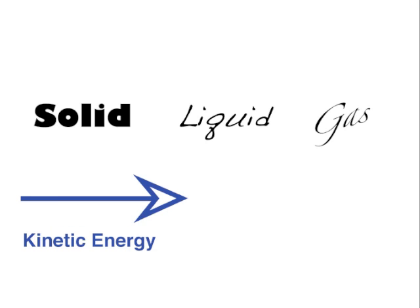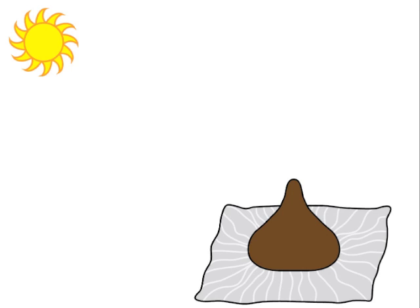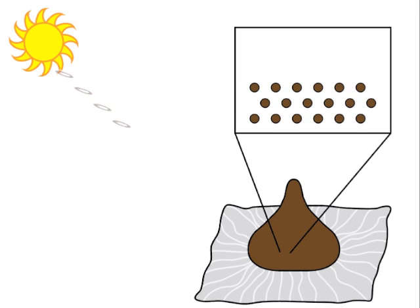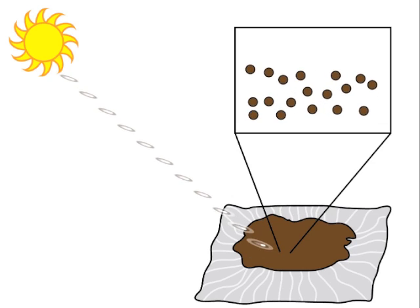An increase in kinetic energy can also cause an object to change shape and state. When photons strike a piece of chocolate left in the sun, energy is transferred to the molecules, causing them to move faster. When they move fast enough to lose their solid structure, the chocolate melts into a liquid.